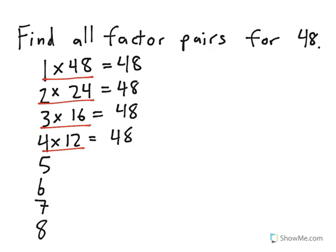If I count by 5s—5, 10, 15, 20, 25, 30, 35, 40, 45, 50—I never get to 48, so 5 is not a possibility.